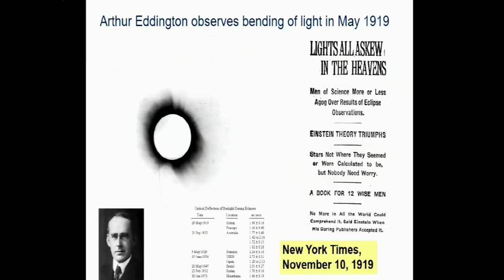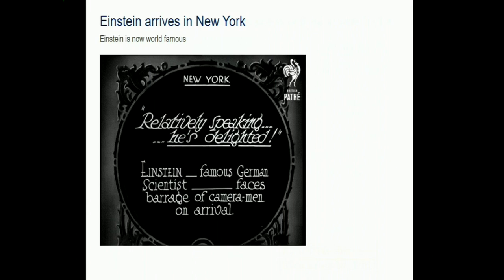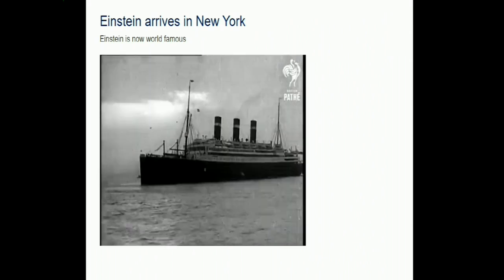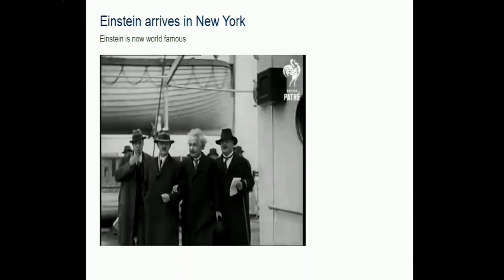This GR prediction was tested by Eddington in 1919 - exactly 100 years ago - and indeed it was found that light from stars bends in the gravitational field of the sun. This made Einstein essentially a superstar. The book claiming this required twelve wise men is probably a slight exaggeration, since undergrads all around the world now study this. Wherever Einstein went from then on, he was very famous.